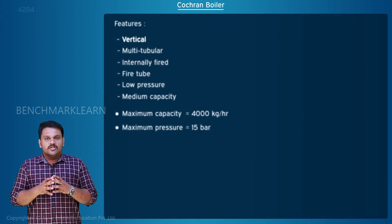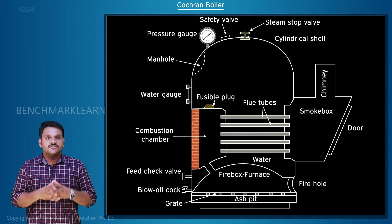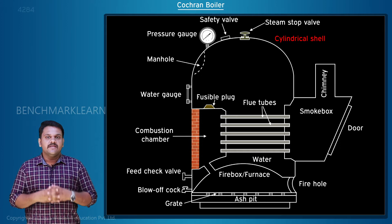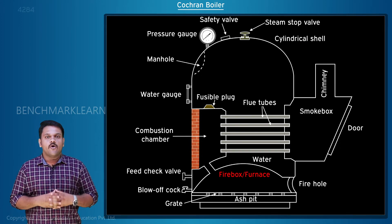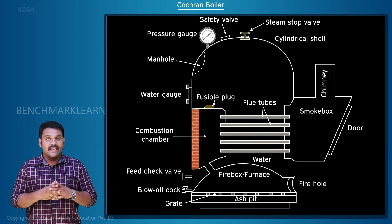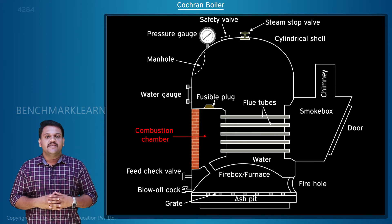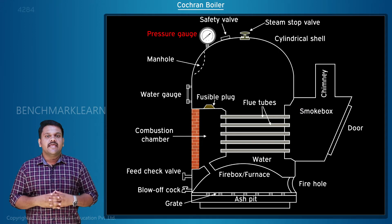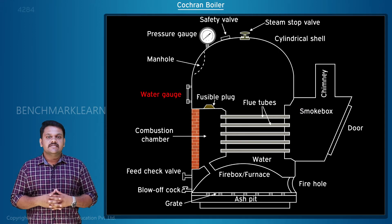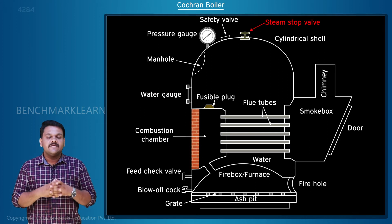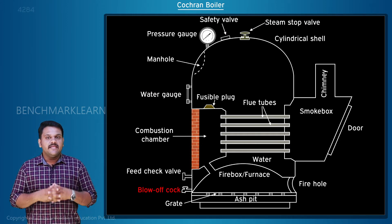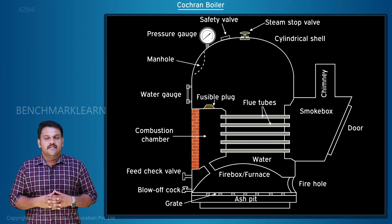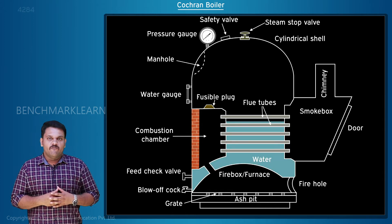The cross-sectional view of a Cochrane boiler is shown here. It mainly consists of a cylindrical shell with a hemispherical top, firebox or furnace, grate, ash pit, combustion chamber, flue tubes, smoke box, chimney, pressure gauge, water gauge, safety valve, and steam stop valve.